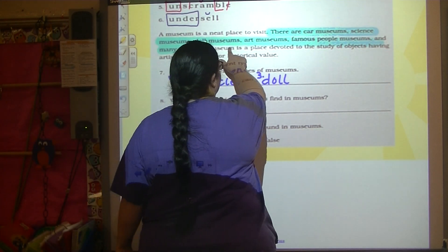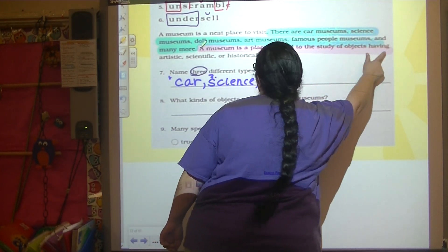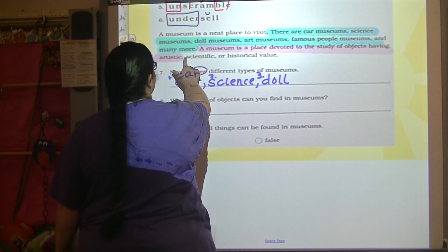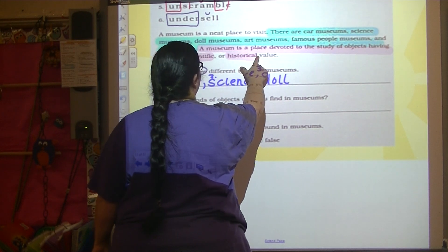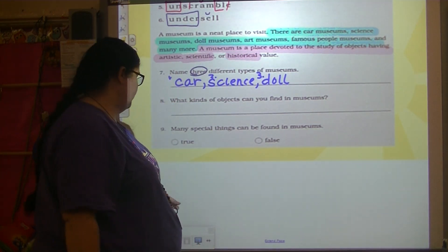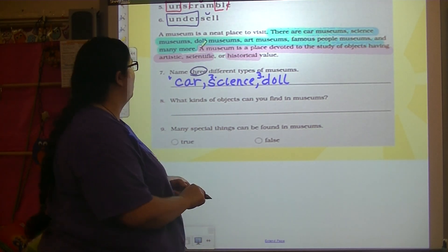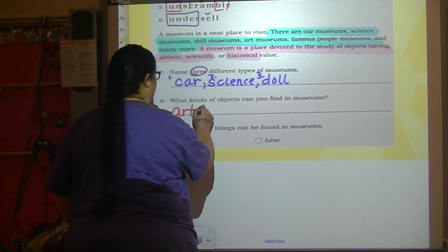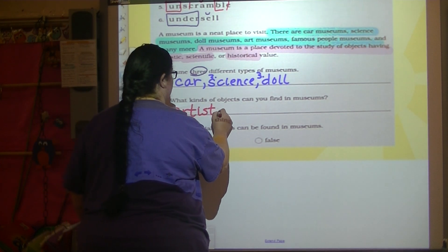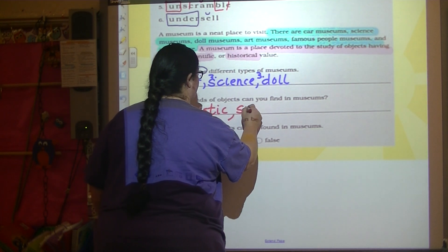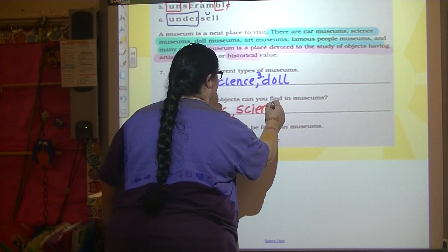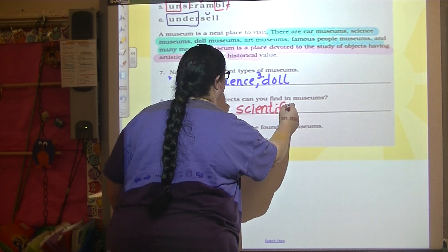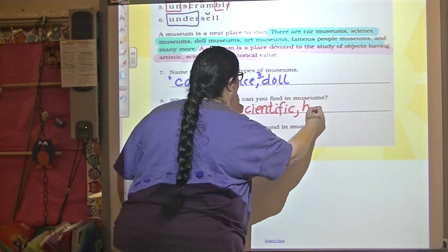Alright, the next sentence says, a museum is a place devoted to study of having artistic, scientific, or historical value. So the kinds of objects you could find are artistic, scientific, historical.